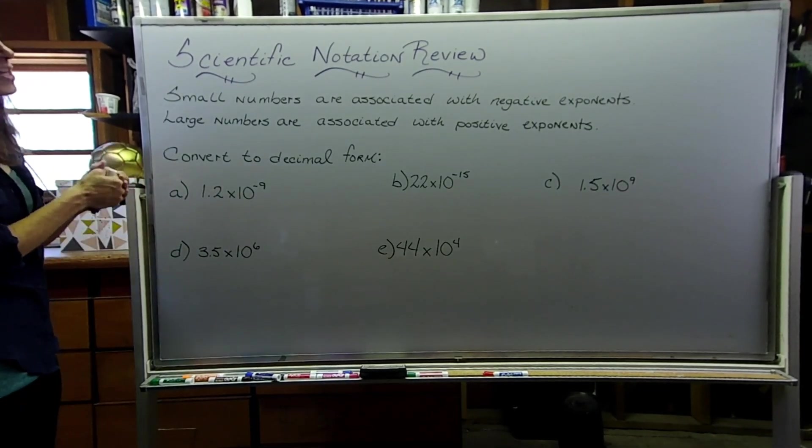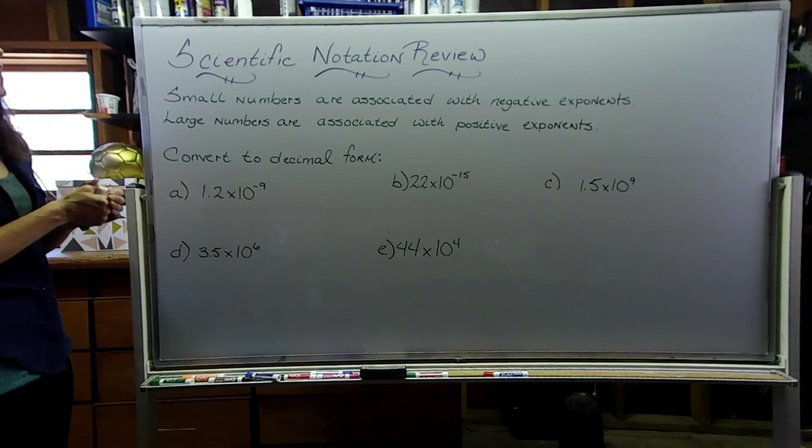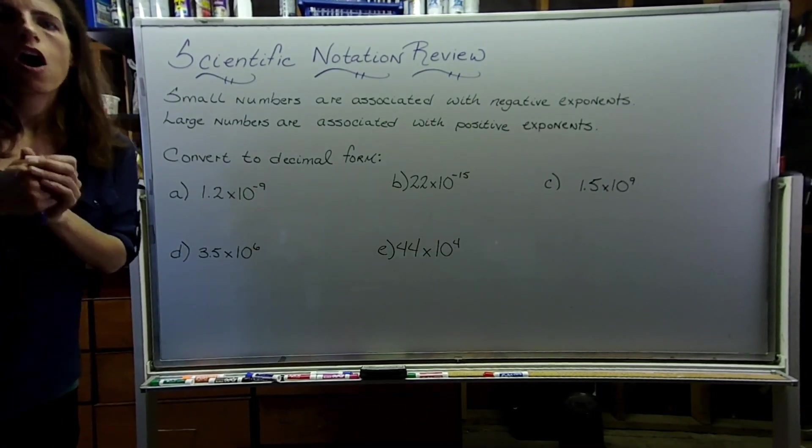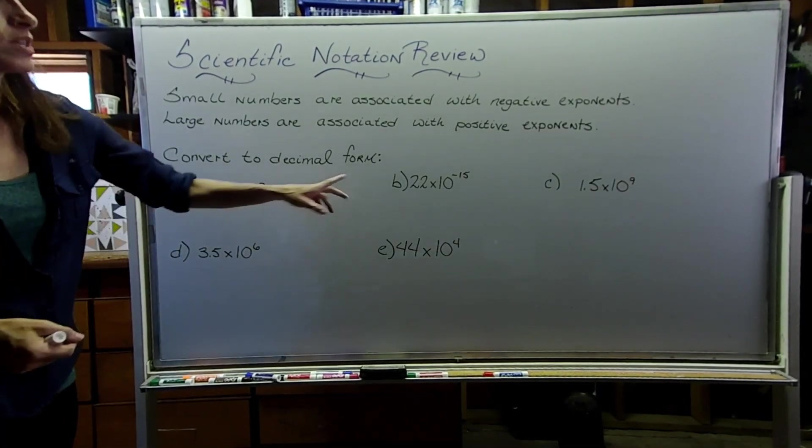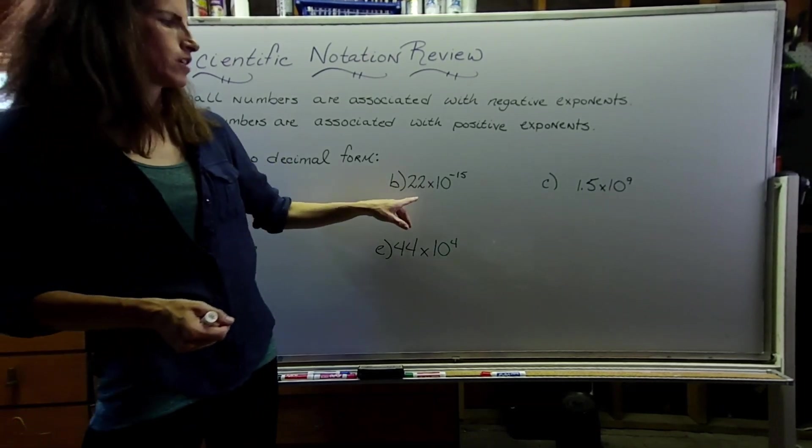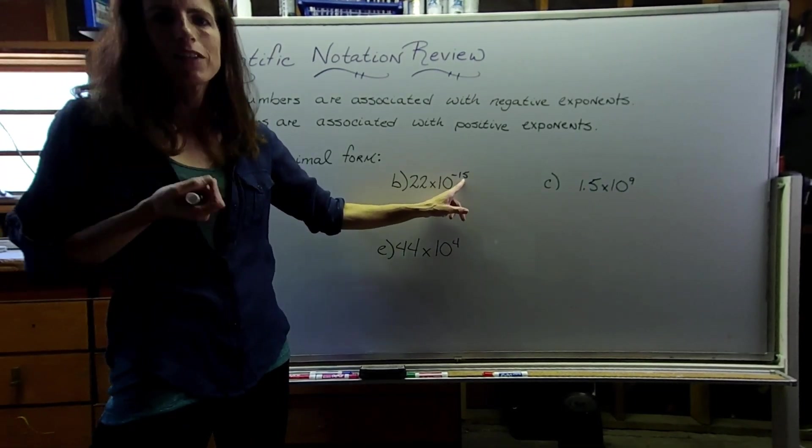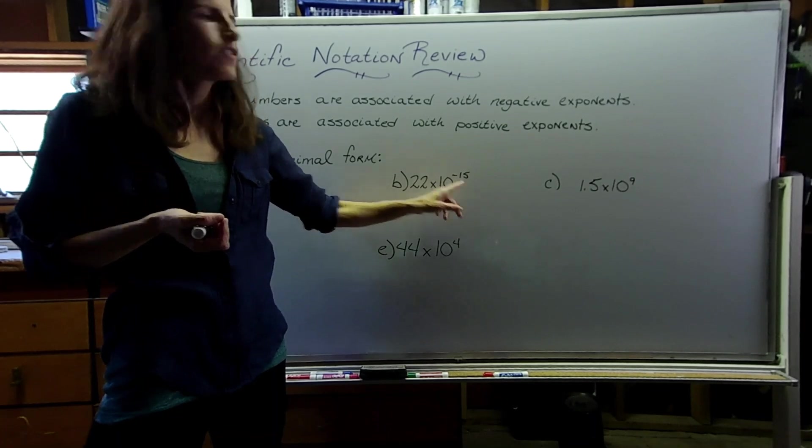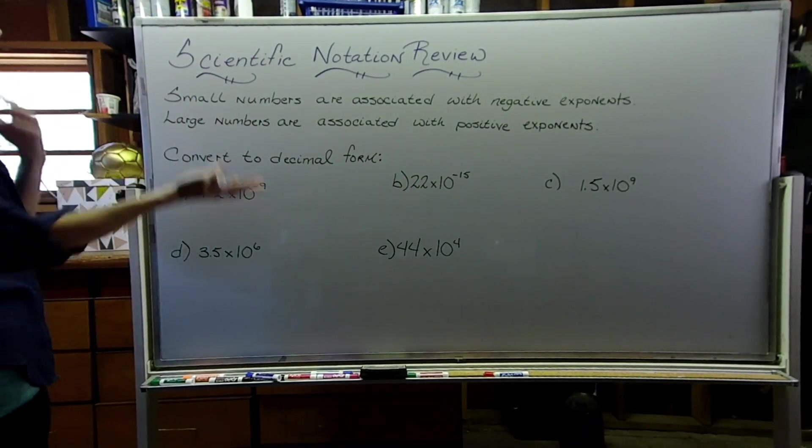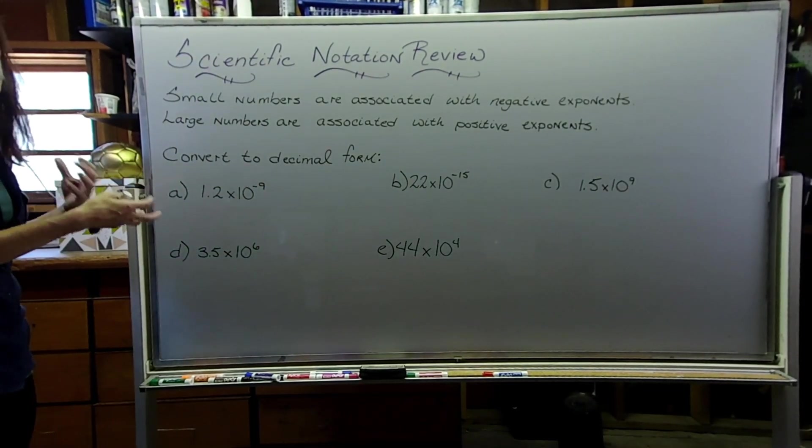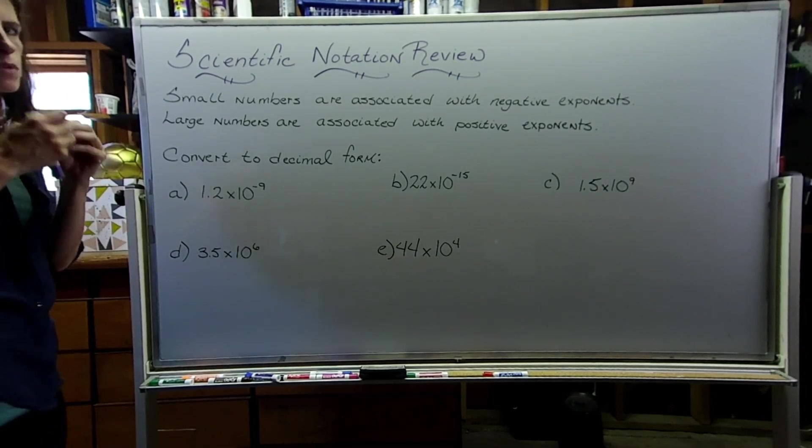The way I think about scientific notation, I think about the fact that small numbers are associated with negative exponents. Letter B on the first page is a perfect example. We got a negative 15, it's negative, so I know that the resulting number when I convert it over to decimal form is going to be really small.